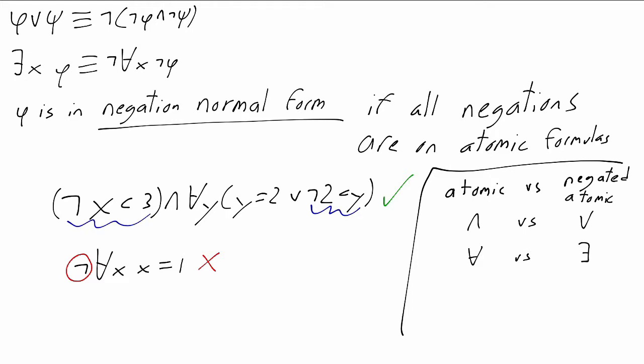And when you think of formulas this way, there's a natural symmetry. Atomic formulas are dual to negations of atomic formulas, AND is dual to OR, FOR ALL is dual to EXISTS.